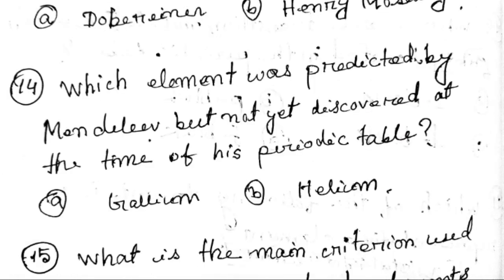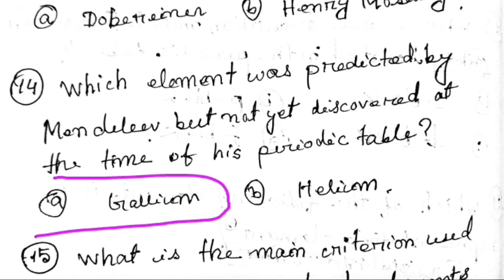Which element was predicted by Mendeleev but not yet discovered at the time of his prediction? The element is known as the Mendeleev prediction.